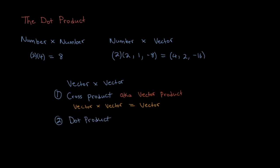And the dot product also multiplies two vectors together, but this time it gives us a scalar as the answer. This is why it's also known as the scalar product.